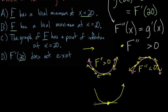So that would mean that at x equals 20, we're dealing with a minimum point. So letter A here, that F has a local minimum at x equals 20, would have to be the correct answer.